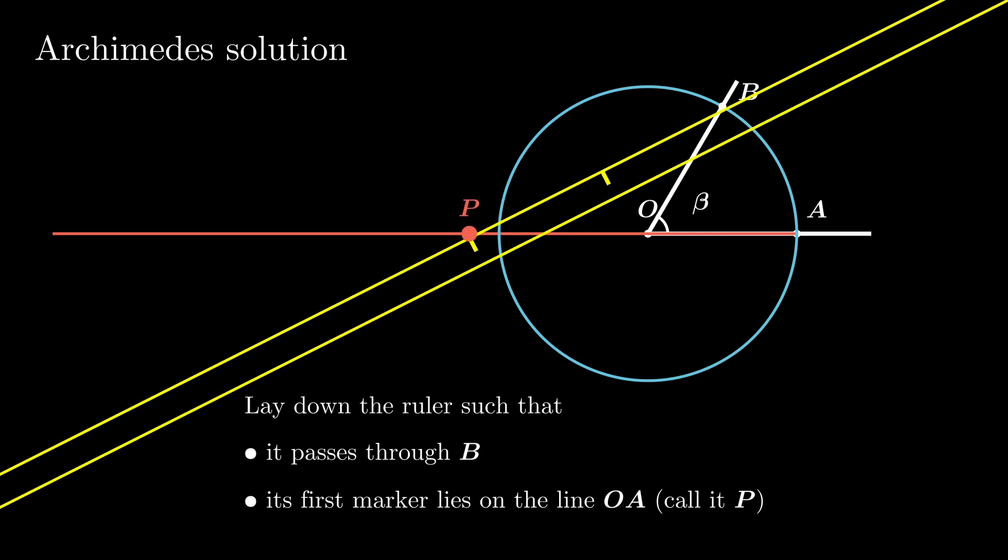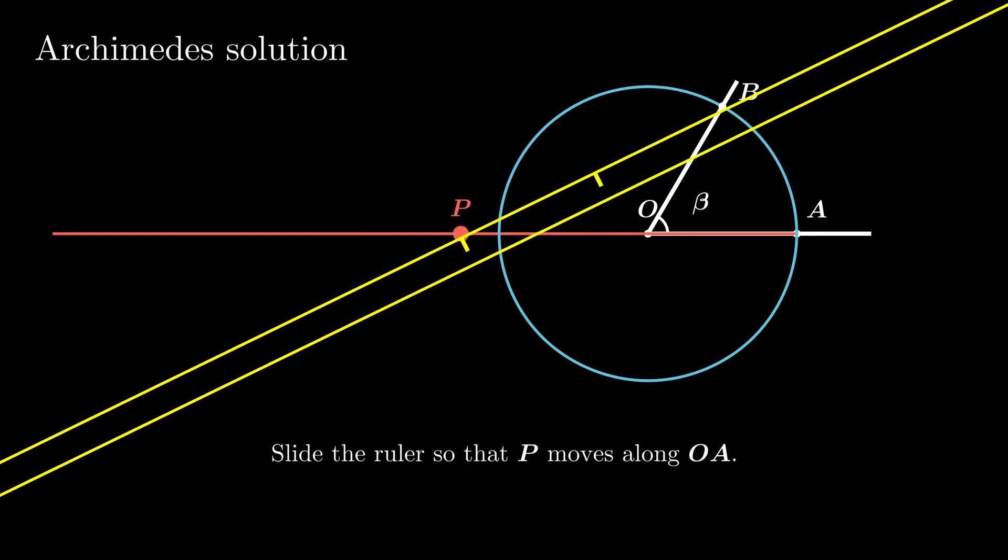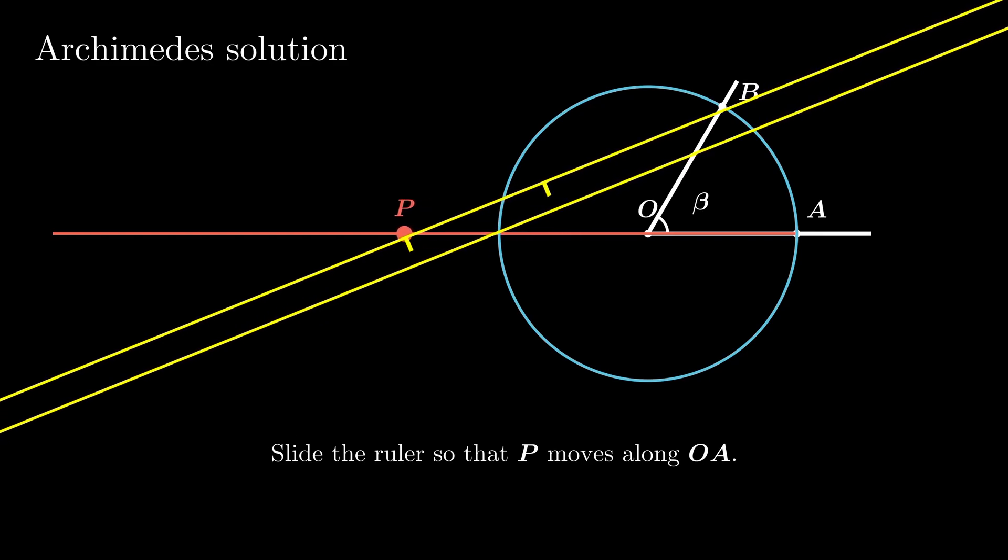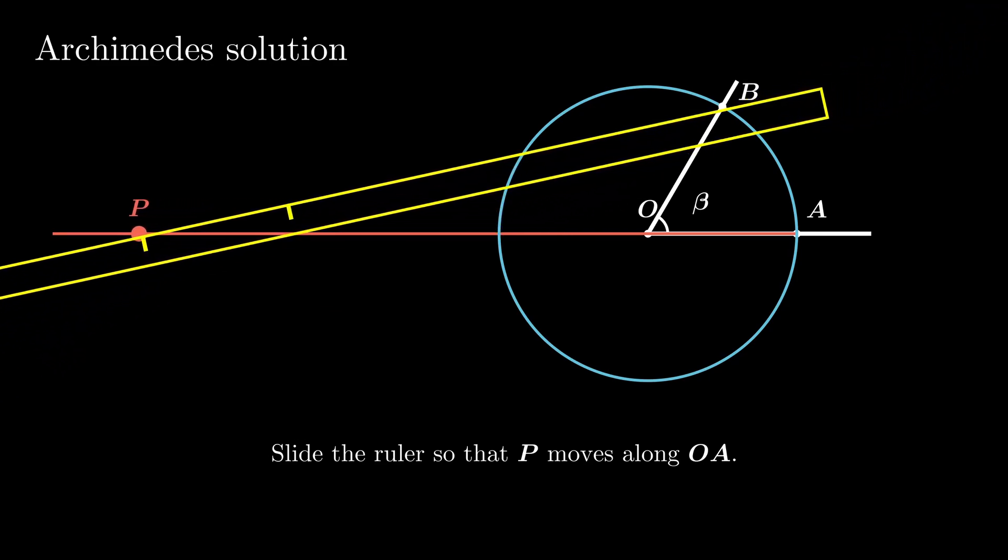Now we lay down the ruler such that it passes through the point B and its first marker lies on the line OA. So we are going to slide the ruler such that P moves along the line OA. And at the same time, the point B lies on the other end.